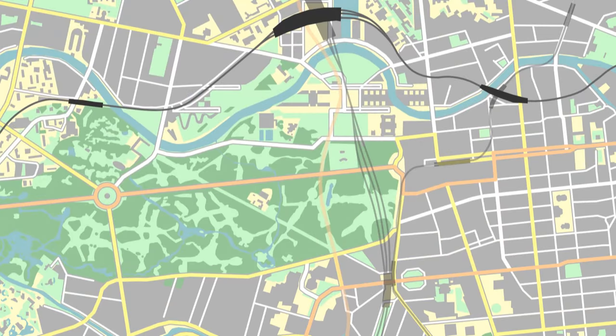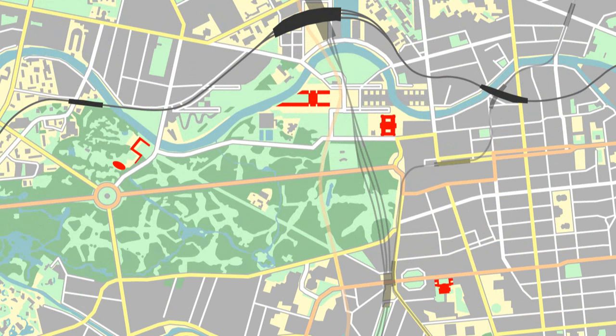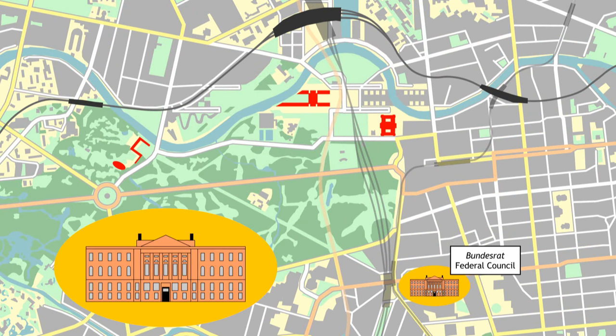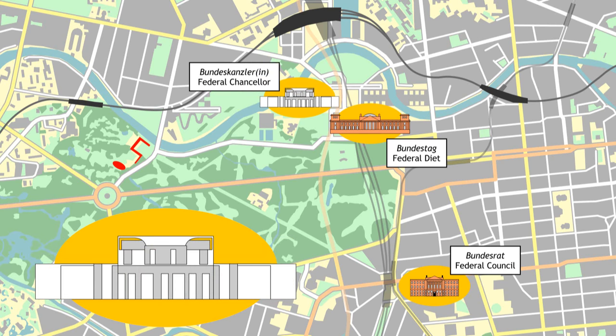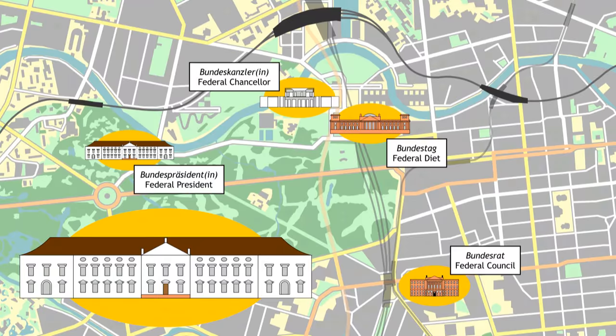It is a bicameral system, which means that there are two chambers. There's the Federal Council, which is made up of some of the members of the 16 state assemblies, and the Bundestag, or Federal Diet, which is the chamber elected by the people. There is also the head of government, the chancellor, and the head of state, the president.